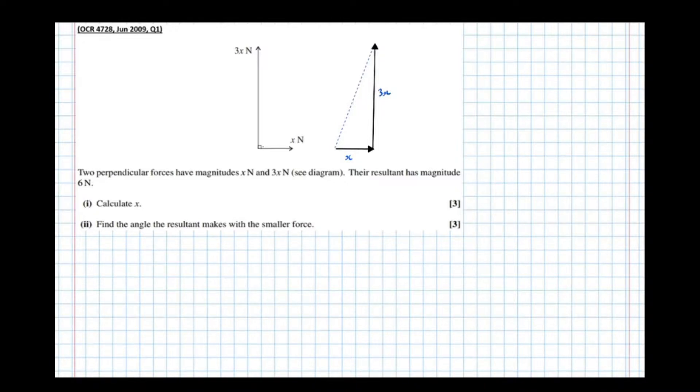So it's telling us to calculate x. Well, if we do that, we know that the resultant is 6 newtons. So using Pythagoras, which is a squared plus b squared equals c squared, we get x squared plus 3x squared equals 6 squared. That is x squared plus 9x squared equals 36. That means that 10x squared equals 36. So x squared equals 3.6, which means that x equals the square root of 3.6.